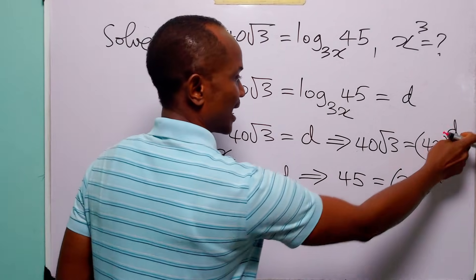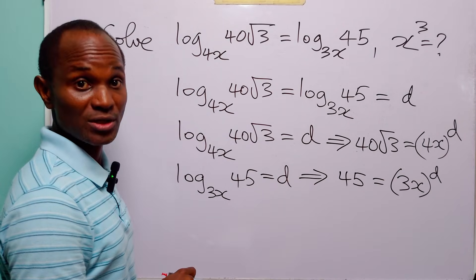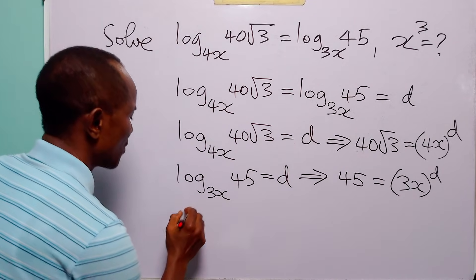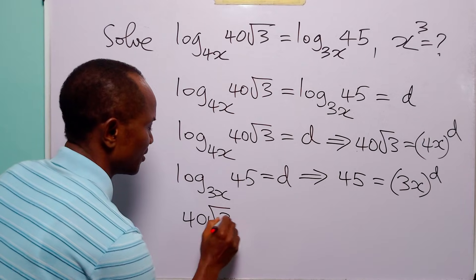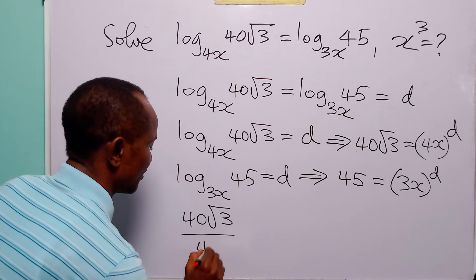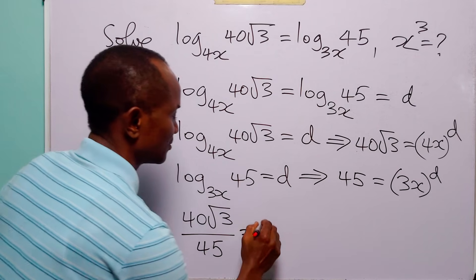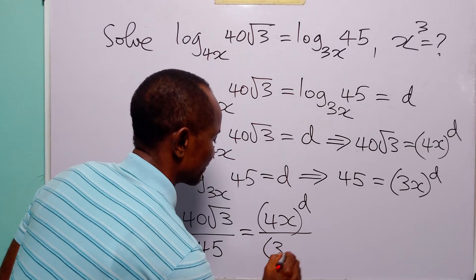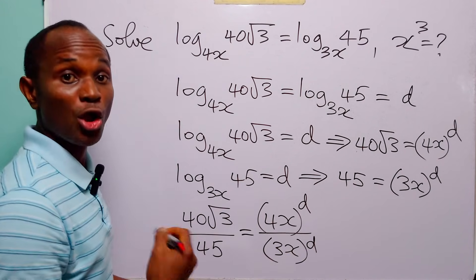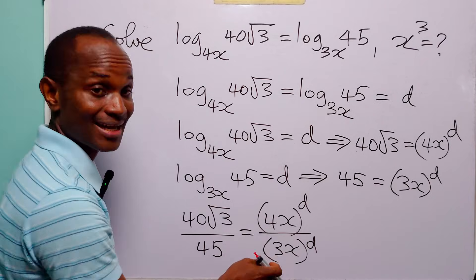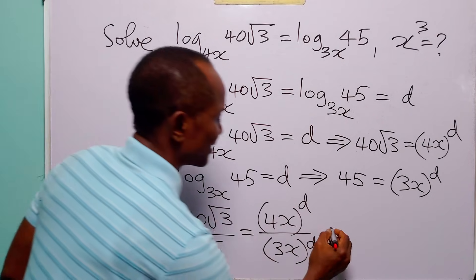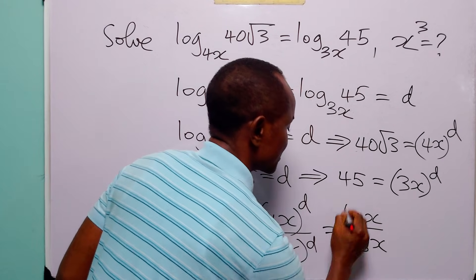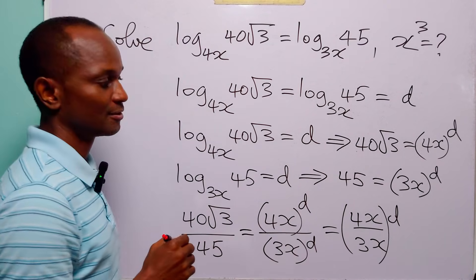To solve these two equations, we are going to divide one equation by the other. Dividing the first equation by the second gives us: 40√3 divided by 45 is equal to 4x to the power d divided by 3x to the power d. Since 4x and 3x have the same exponent d, we can combine them as (4x divided by 3x) all to the power d.